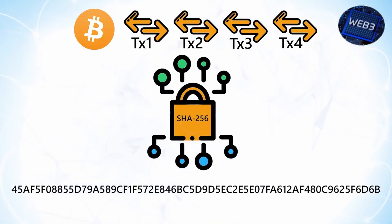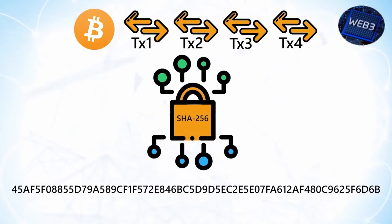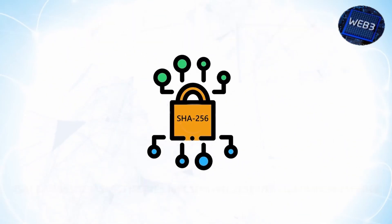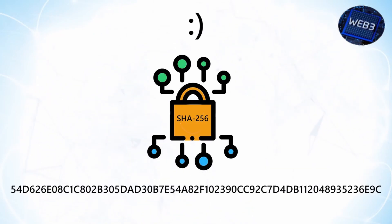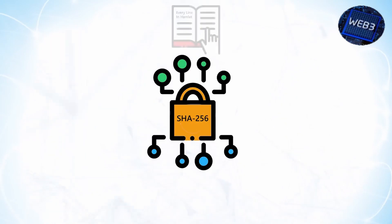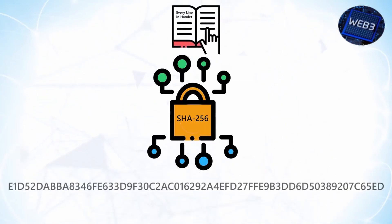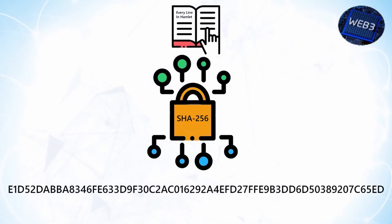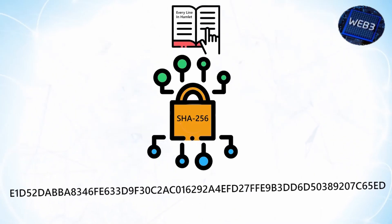Let's see how the hashing process works. For this exercise, we're going to use the Secure Hashing Algorithm 256, or SHA-256. In the case of SHA-256, no matter how big or small your input is, the output will always have a fixed 256-bit length. This is critical when dealing with a huge amount of data and transactions. Instead of remembering a large amount of input data, you can remember the hash to keep track.